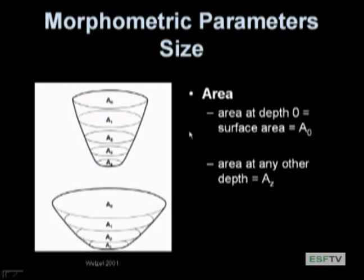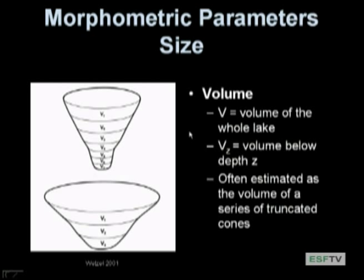The next morphometric parameter is volume, represented by V. Volume itself is the total volume of the whole lake in cubic meters when filled. If you want to know the volume below any given depth — say if we drew the water down one meter in a reservoir — that would be V sub one. We can estimate this volume using the area at the top of successive depth profiles and calculating the volume in between each one as a truncated cone.